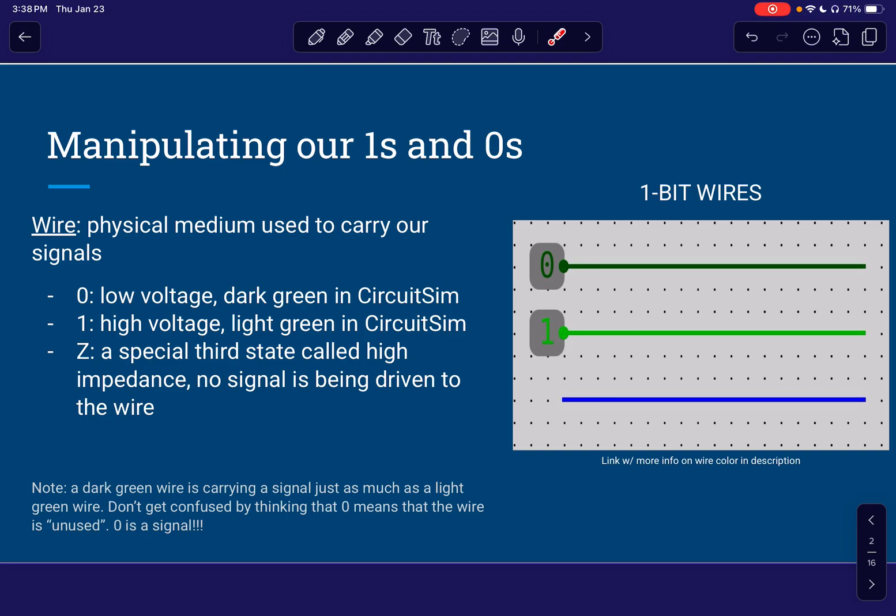So I want to make this point really clear because sometimes I'll see this confusion where people think that, oh, the wire's dark green. It's got a zero on it. That means it's not being used. And that's not the case. A zero is just as valid and carries just as much information as a one. So a zero is a signal. Do not get that confused. Blue is where there's no signal being driven to the wire. Zero and one, they both have signals.